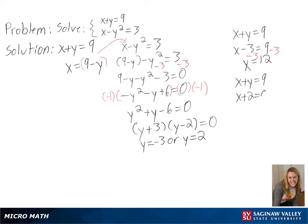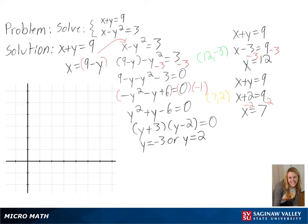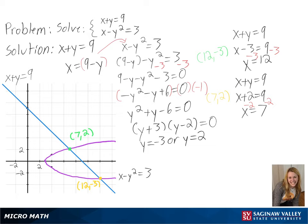So our intersections are at (7, 2) and (12, -3). We can also graph our equations using our x and y intercepts and slope, and again find our points of intersection. And with that, our problem is finished.